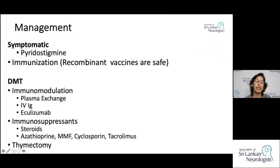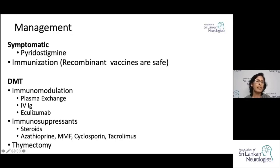For disease-modifying treatment, immunomodulation options include plasma exchange, IVIG, and the monoclonal antibody eculizumab. Other immunosuppressants used include steroids, azathioprine, mycophenolate mofetil, cyclosporine, and tacrolimus. Thymectomy also has an established role in the management of myasthenia gravis.